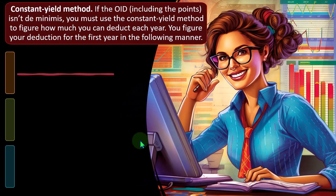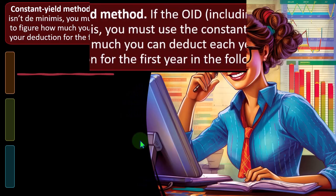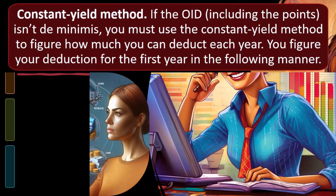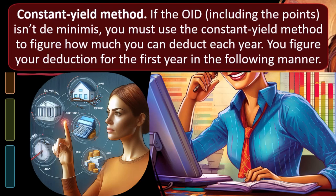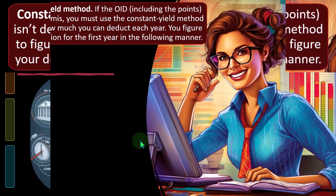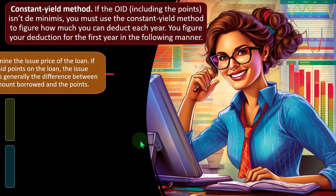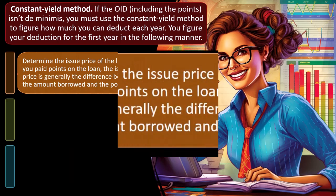Carol determines the points OID she paid are de minimis: $100,000 × 30 years × 0.0025 = $7,500 de minimis threshold. The $1,500 OID she paid is less than $7,500, so it qualifies as de minimis. Therefore Carol can choose one of the four simplified methods. Under the straight-line method — the one most people pick because it's easiest — she can deduct $50 each year for 30 years ($1,500 ÷ 30 years), amortizing over the life of the loan rather than the depreciation life of the property.